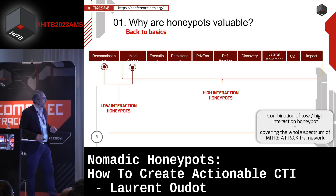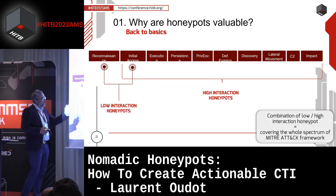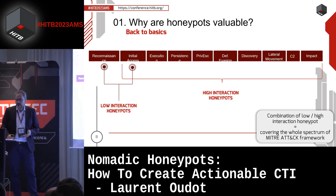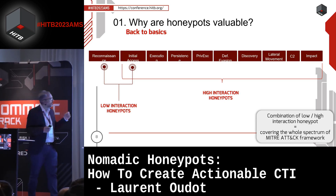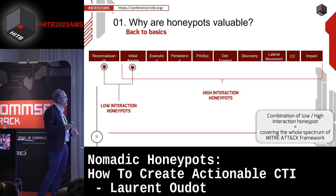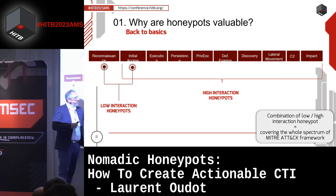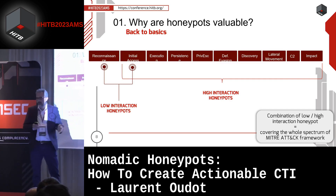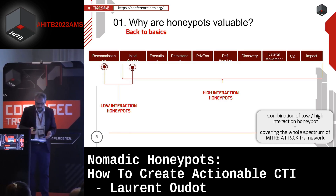Looking at the kill chain, with low interaction honeypots we mainly focus on the reconnaissance and initial access phases. With high interaction honeypots we go further, but it's more work and more dangerous.